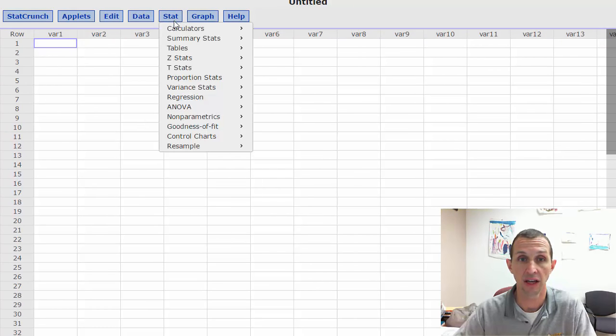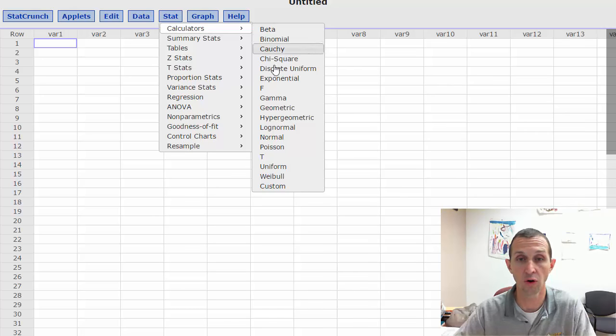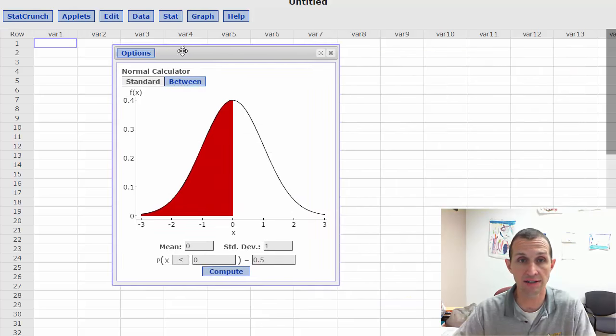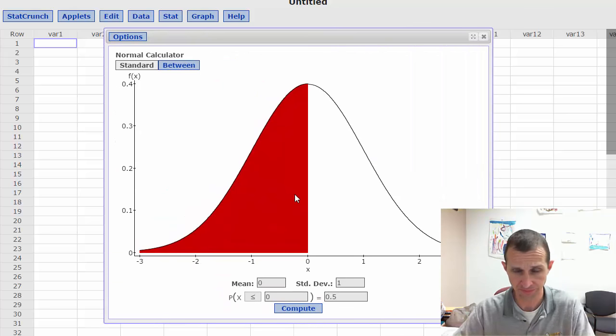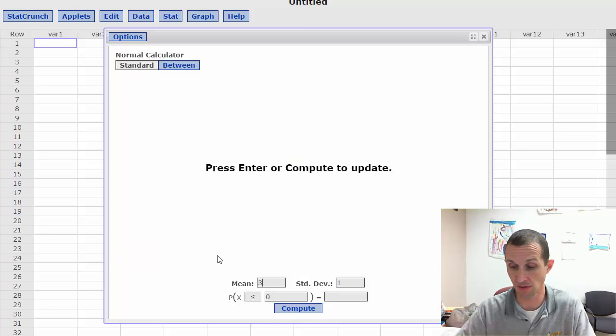So if you click on stat and you go down to calculator and then you go over to normal and you click on it, what you'll get is this very nice normal curve that you can modify. And so what we want to do is the standard normal model has a mean of zero and a standard deviation of one but lowland gorillas in zoos have a mean of 31.7 and they have a standard deviation of 11.7 years.